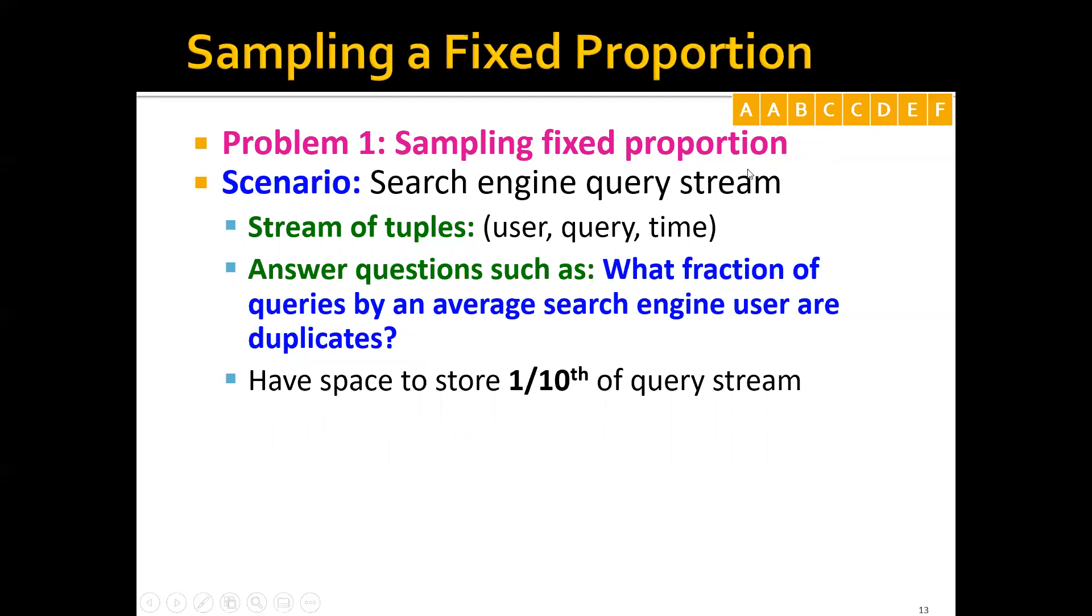For example, let's say that the user has issued eight queries already, and this is actually only six unique queries: A, B, C, D, E, and F. You can see that both query A and query C are duplicates. So in this case, the fraction of queries that are duplicates is one over three.